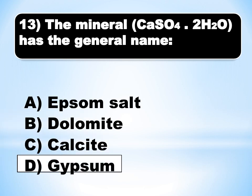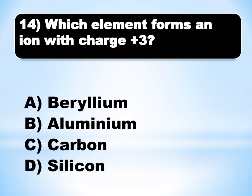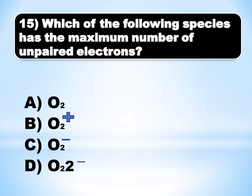MCQ number 13: Which element forms an ion with a 3+ charge? This is the most easy MCQ. The answer is B (beta): aluminium, which shows a +3 charge and belongs to group 3.